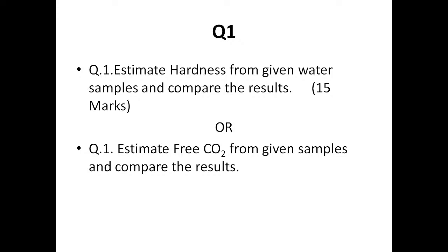We have the system in which we give the X and Y type, so the X student may get one and the Y student will get another. Question number 1 first option: estimate hardness from the given water sample and compare the result. You will get water samples to find out the hardness. Or the second option: estimate the free carbon dioxide from the given samples and compare the result.